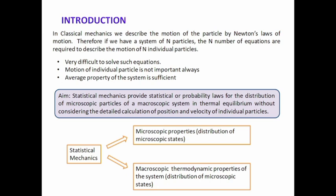In classical mechanics, the motion of particles can be described by Newton's law of motion. For a system of n particles, n number of Newton's equations of motion is required to describe the motion of the n individual particles. For example, in one mole of gas, that is 10 to the power 23 number of molecules are present. So it is very difficult to solve 10 to the power 23 Newton's equations of motion. It is also not needed to know the motion of individual particles, so in classical mechanics there is a drawback.